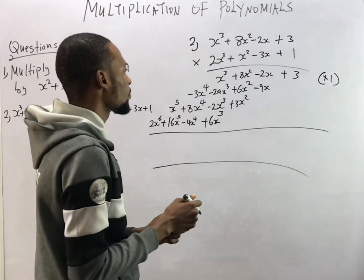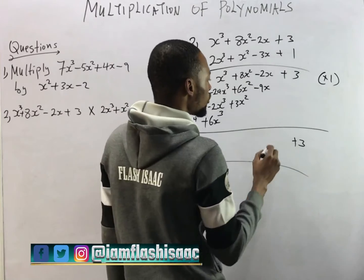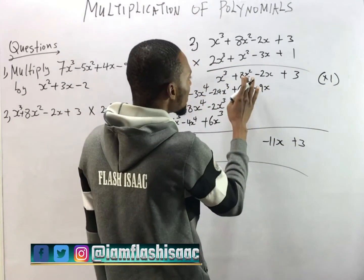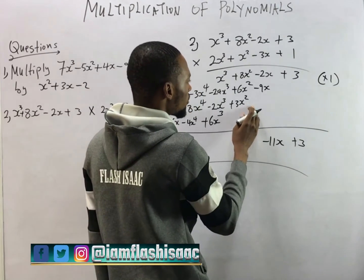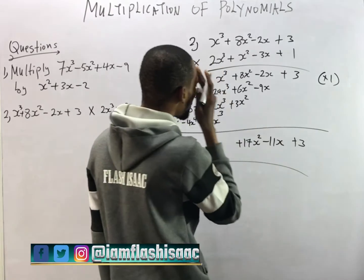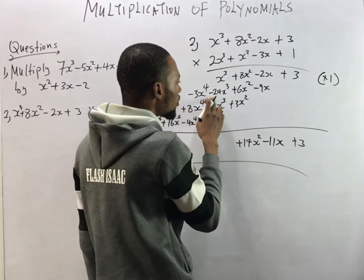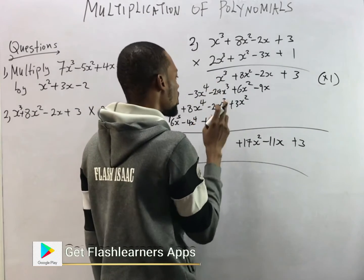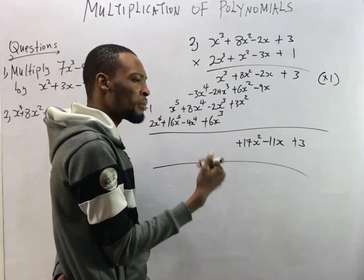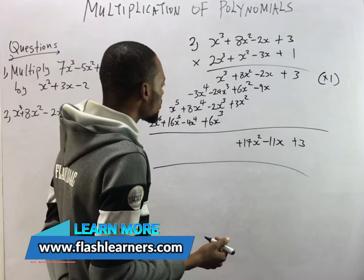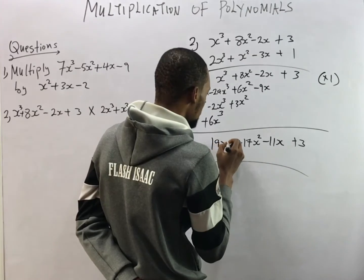Now let's add all the polynomials. The constant term remains plus 3. For s: minus 2s plus minus 9s gives minus 11s. For s²: 8s² plus 6s² is 14s², plus 3s² gives 17s². For s³: combining terms gives minus 25s³, then adding 6s³ gives 19s³ — wait, that becomes minus 25s³ combined with remaining terms giving the s³ result.